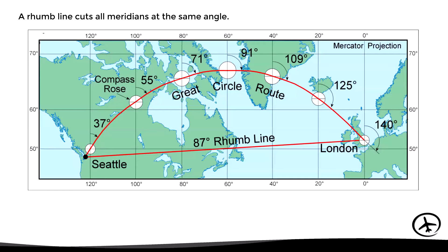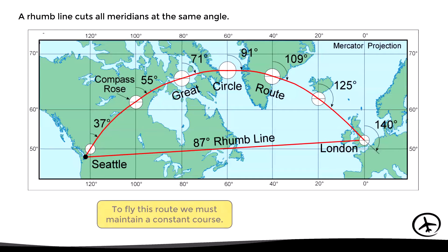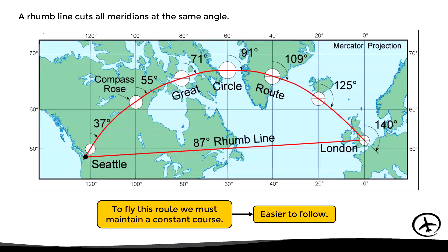On the other hand, a rhumb line cuts all meridians at the same angle, meaning the course is always the same. For example, to fly the rhumb line route from Seattle to London, we simply depart from Seattle and set course 087 until reaching London. The navigation is much more simple, and therefore we say this route is easier to follow.